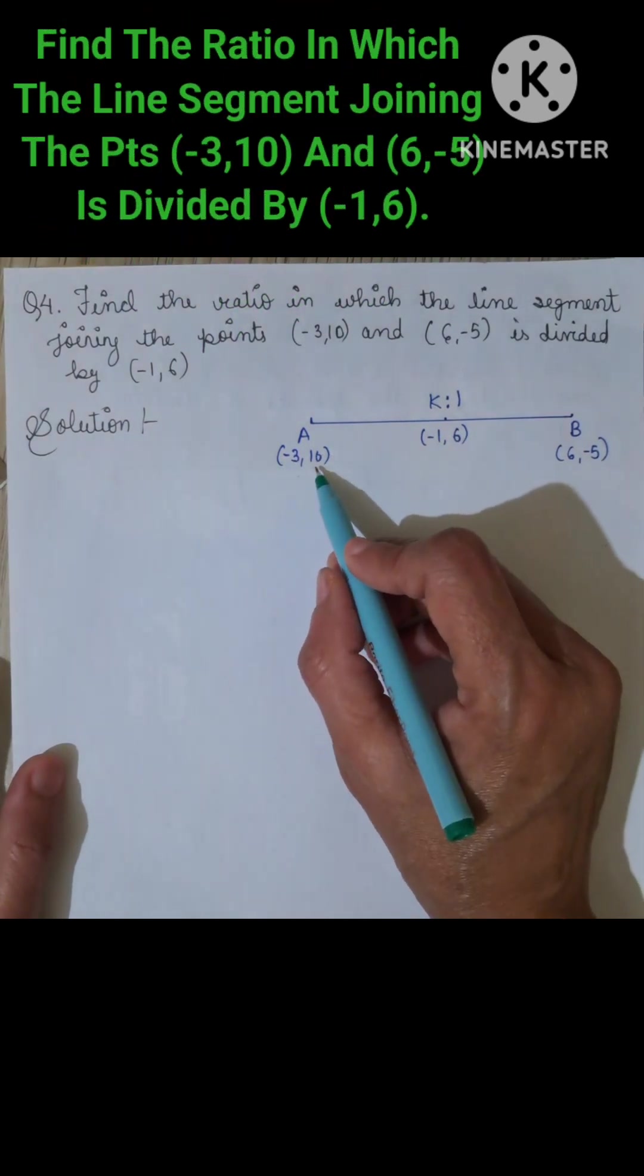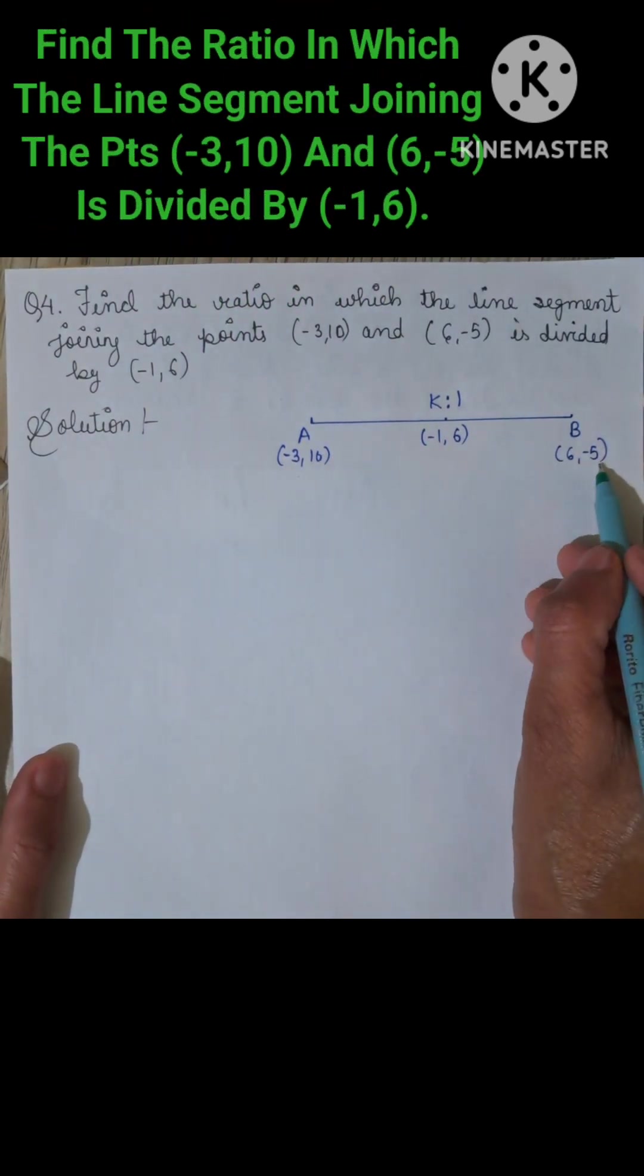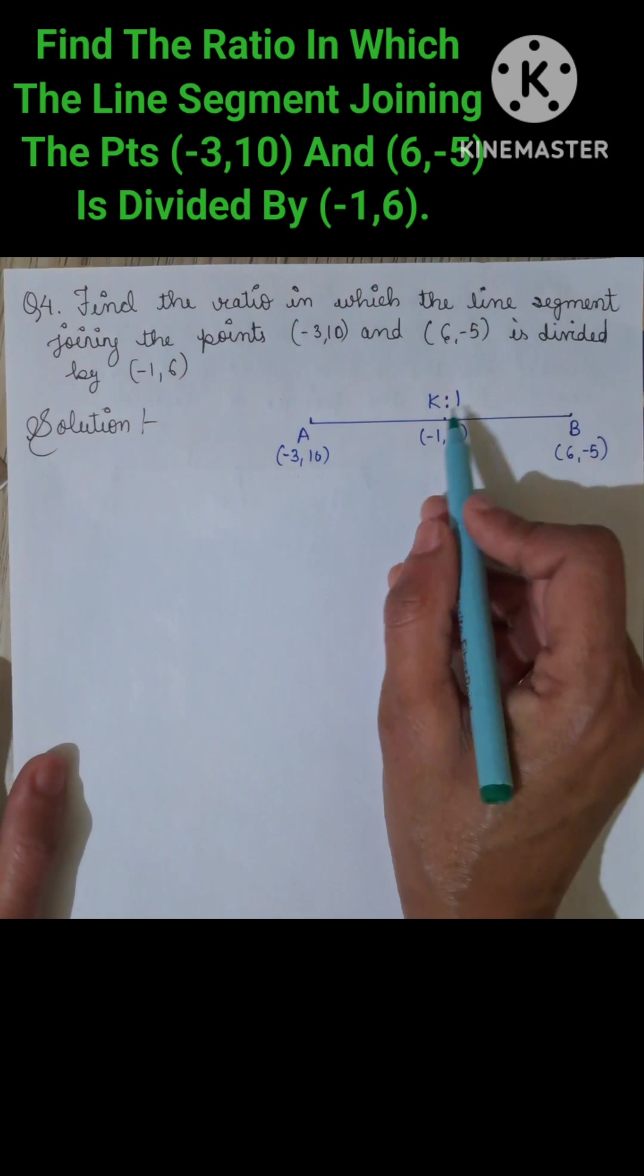Point A is given as (-3, 10) and B is (6, -8). We have to find the value of K.